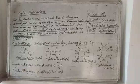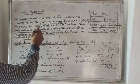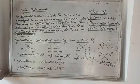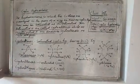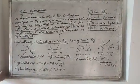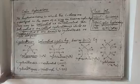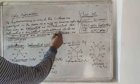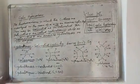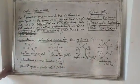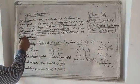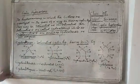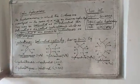There may be saturated cyclic hydrocarbons or unsaturated cyclic hydrocarbons. The saturated cyclic hydrocarbons are also known as cycloalkanes, while the unsaturated cyclic hydrocarbons are also known as cycloalkenes or cycloalkynes.